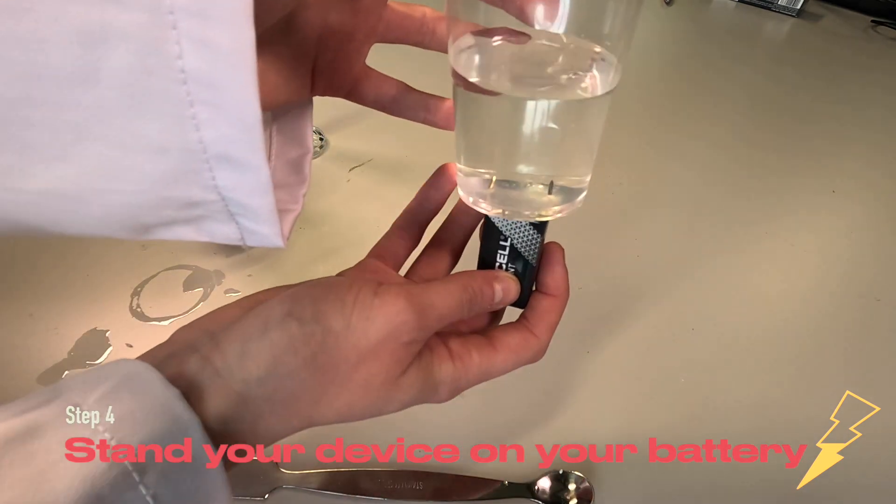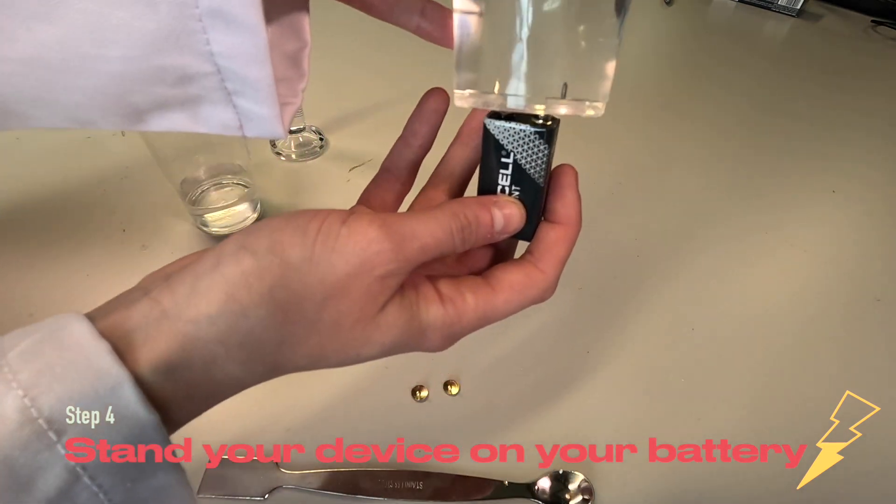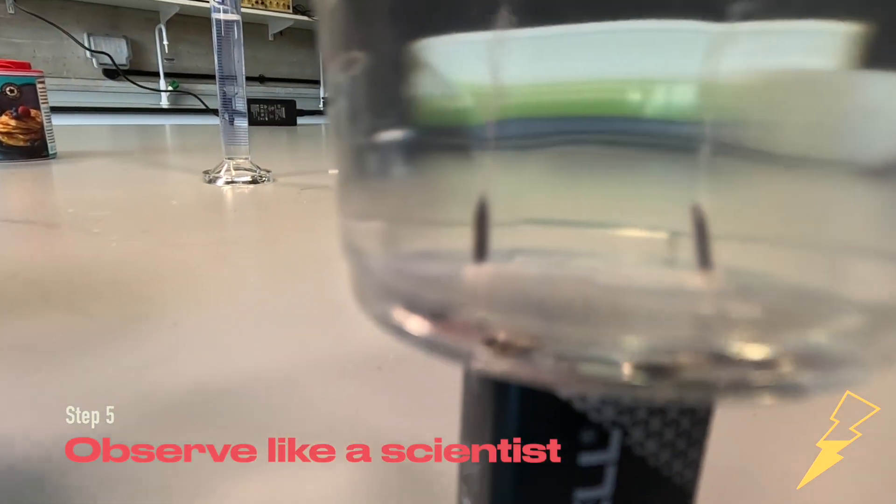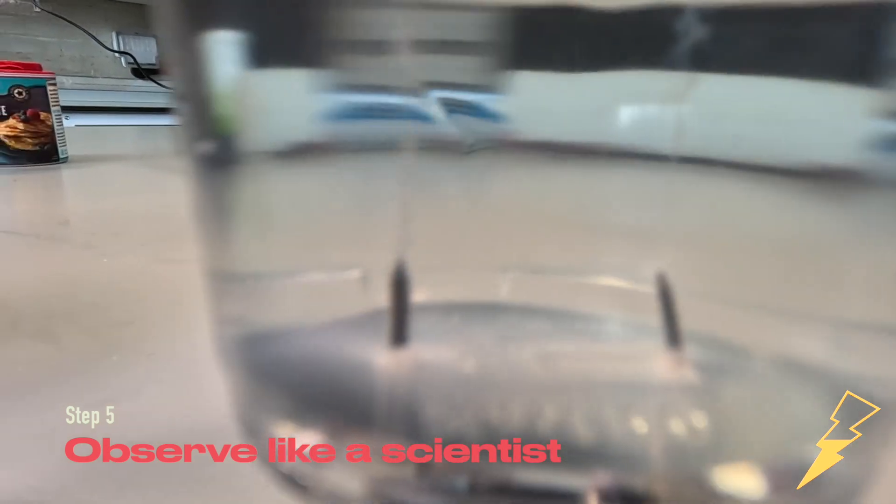Now we take our nine volt battery and place it on the bottom of our cup. It might be a bit difficult to see at first but we are generating some bubbles out of the little metal pins and that is how you make the bubble machine.